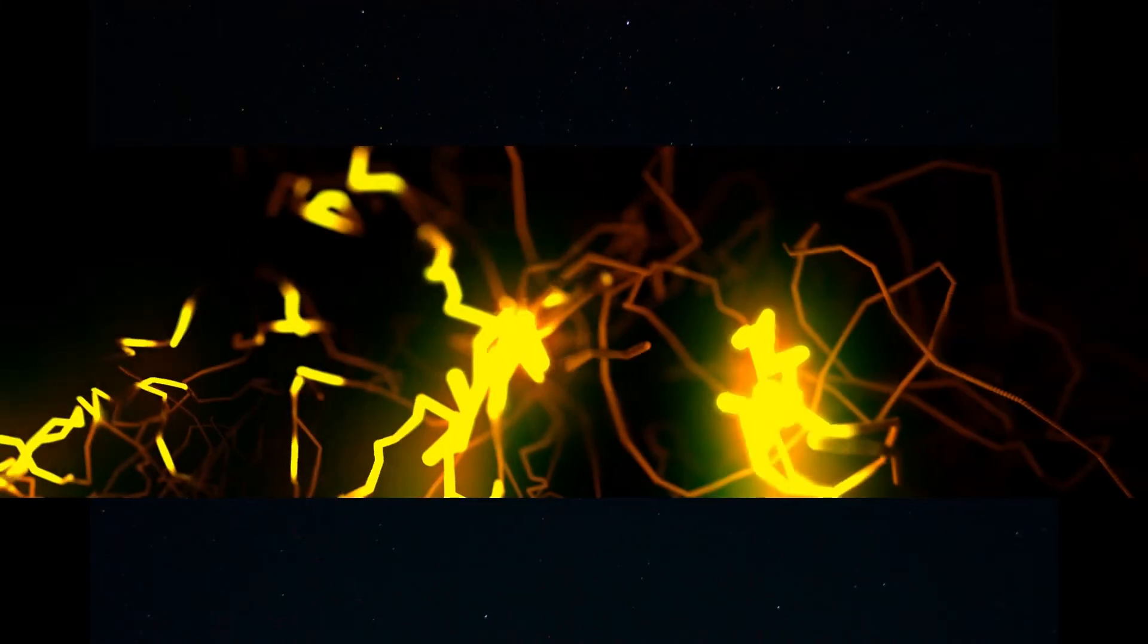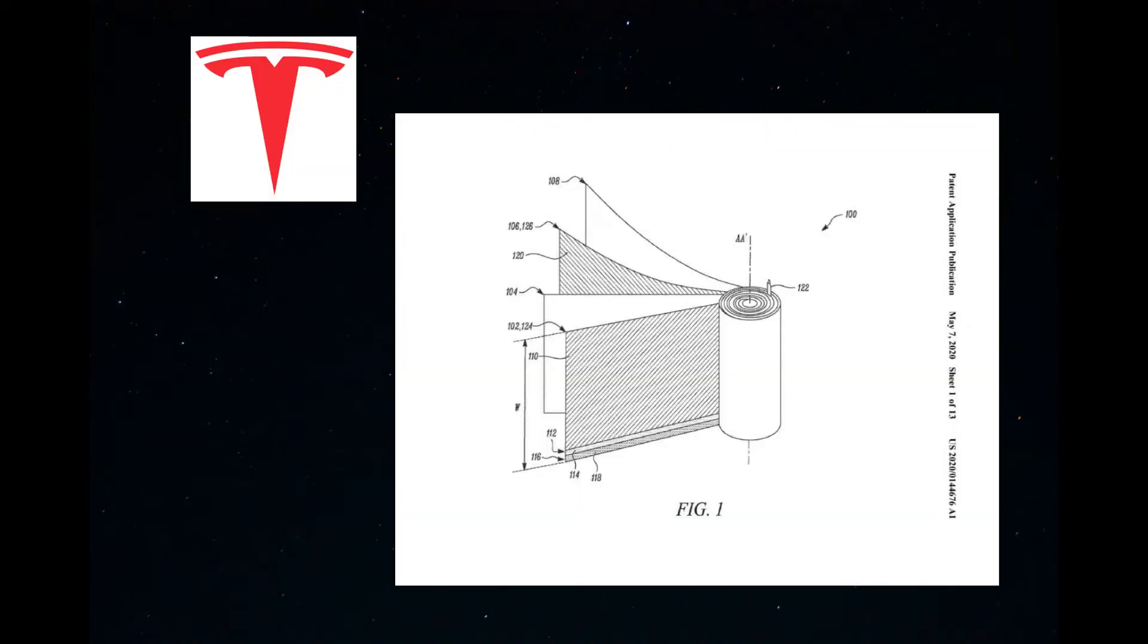Now Musk has responded on Twitter to news regarding the latest in a string of battery patents. The patent description describes the significance of the technology as follows: Many types of battery cells are currently used as energy sources in electric vehicles and energy storage applications.